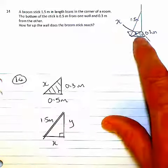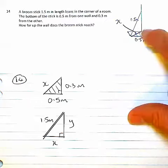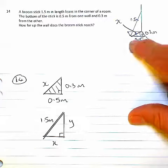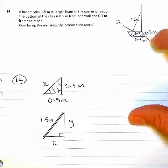I then need to find this base length, that's the distance out from the corner of the two walls that the broomstick lies.